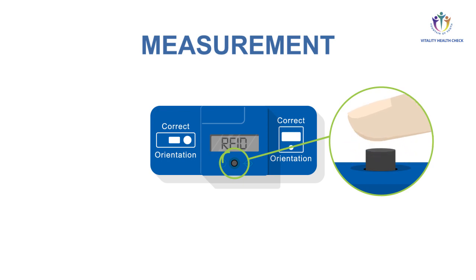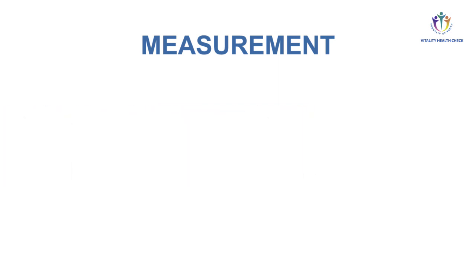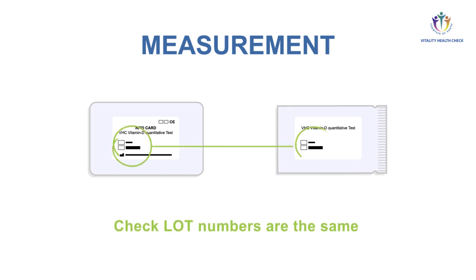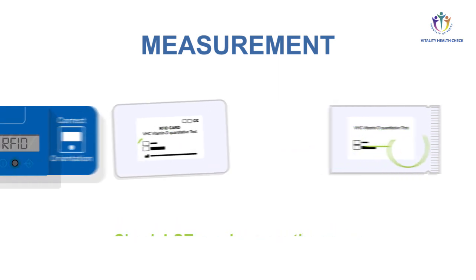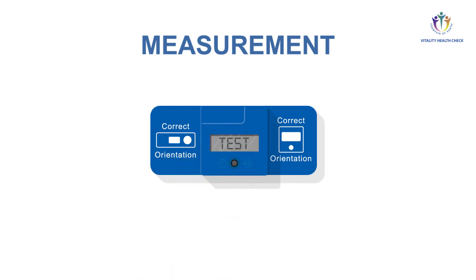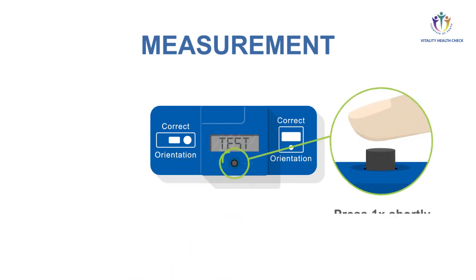Timer mode can now be activated by pressing the button long until the display switches and shows RFID. Verify the lot numbers of the test packaging and the RFID card are the same. Place the RFID card on top of the VHC reader. A beep tone confirms the data transfer is completed. The display will show test. Press the button again.